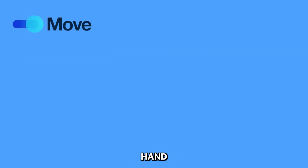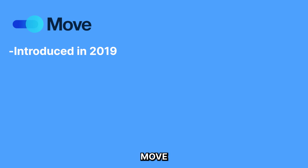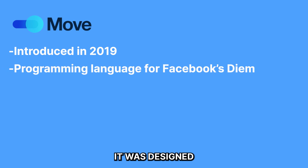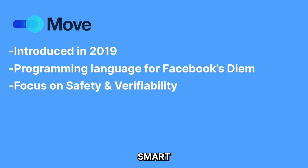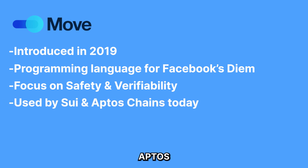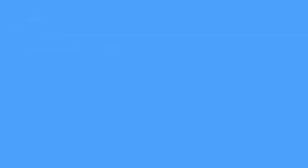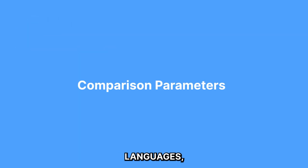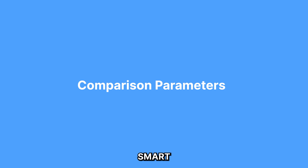Move on Sui, on the other hand, is a much newer language. Move was introduced in 2019 and was primarily designed for Facebook's Diem blockchain. It was designed from the ground up with a focus on safety and verifiability in smart contract development. Today, Move is being used by Sui and even Aptos as their core programming language. To compare these two programming languages, we will weigh them against a set of parameters that are important to developers when choosing a smart contract language.